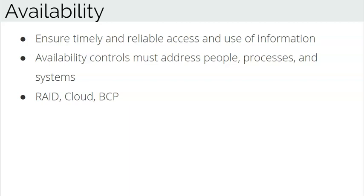The third security objective, Availability, ensures reliable and timely access. Fault tolerance mechanisms such as RAID, cloud solutions, and recovery procedures are methods to achieve availability. We also need to ensure the availability of all three components — people, process, and system or technology — because if any one of these is missing, we cannot meet the security objective of availability.